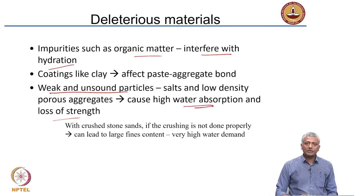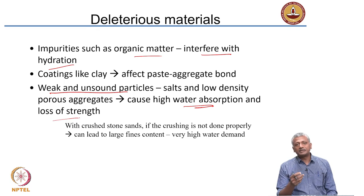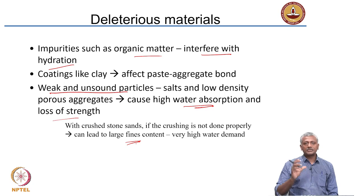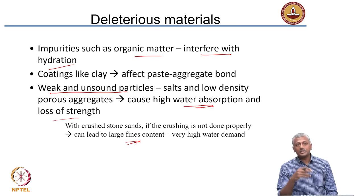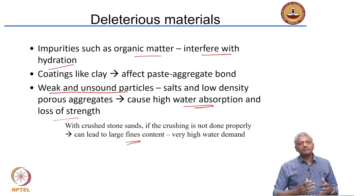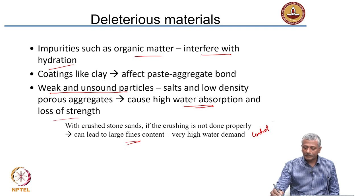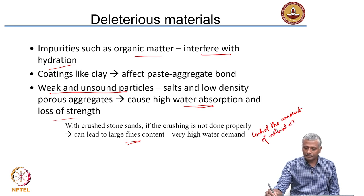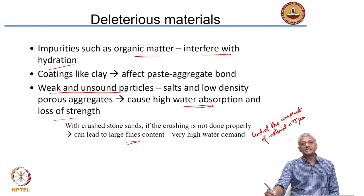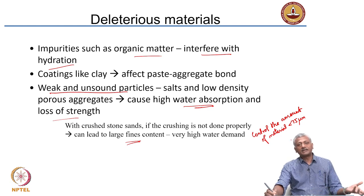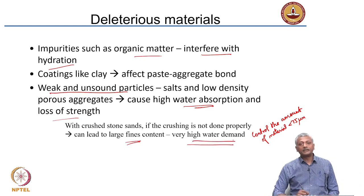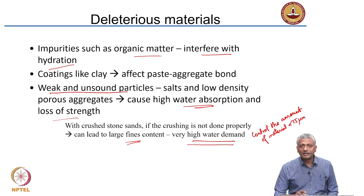But here you need to be careful. When you crush the stone as sand, depending on the type of mineral, you get very large quantities of fines. Even with a good crushing process, you will still get a lot of fines, and you need to ensure the fines are washed out or removed through some classification scheme to get good quality aggregate of the right size. You need to control the amount of material lower than 75 microns because that may be silt or clay, which will increase your water demand tremendously.